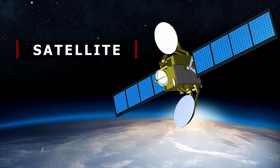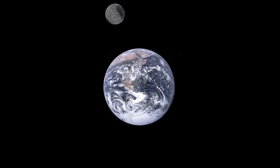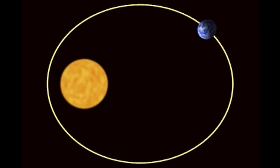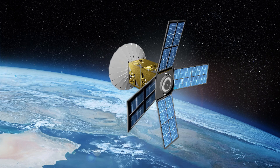So what is a satellite? A satellite is any object that orbits another larger object. For example, our moon is a satellite of Earth, and Earth is a satellite of the Sun. There can be many such satellites — these are known as natural satellites.